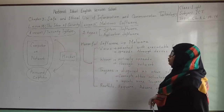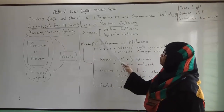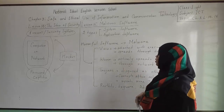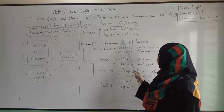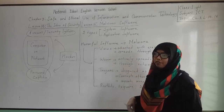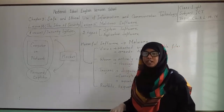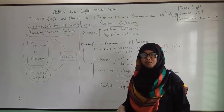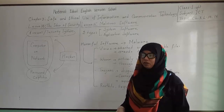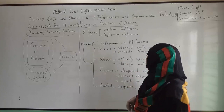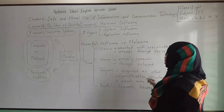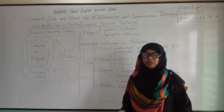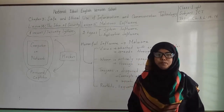Usually we use two types of software. One is system software and the other is application software. System software is the kind of software that we use to run the computer system, such as the operating system — Windows or Macintosh.